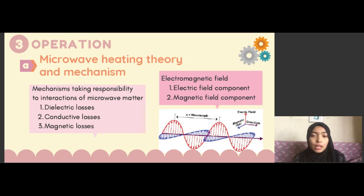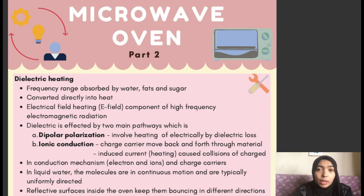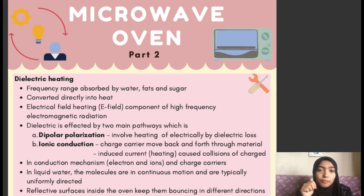Therefore, it propagates in transverse electromagnetic mode, known as TEM. Microwave ovens use electromagnetic waves at a frequency of 2.45 GHz, known as microwaves. In this frequency range, they are absorbed by three elements: fats, sugar, and water. When absorbed, they are converted directly into heat.